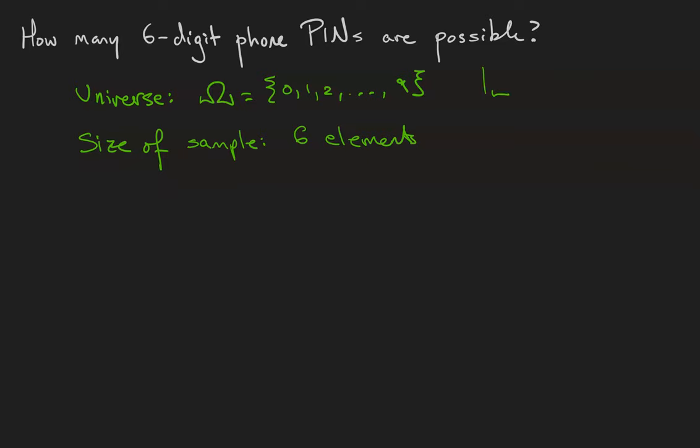There are ten elements to choose from. So I have my first element, second element, third element, fourth element, fifth element, and sixth element. Well how many choices do I have for the first digit of my password? I've got ten choices because I can choose any of the characters in omega, any of the digits 0 through 9.